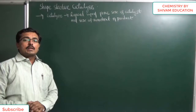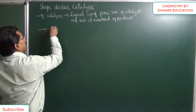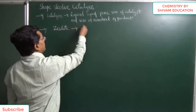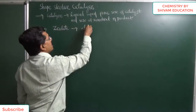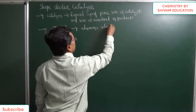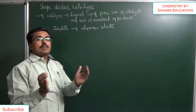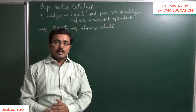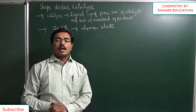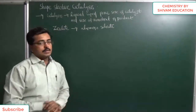It is observed that zeolite is a shape selective catalyst. Now, what is zeolite? Zeolite is chemically known as an aluminosilicate. In a three-dimensional network structure of silicate, some silicon atoms are replaced by aluminium, and then we get an aluminosilicate.